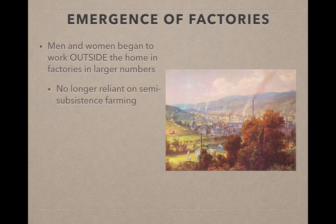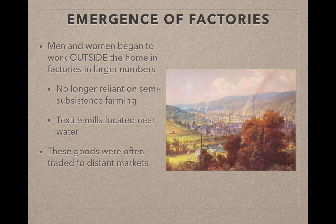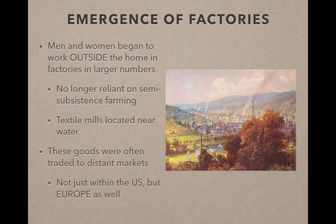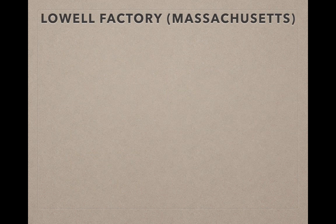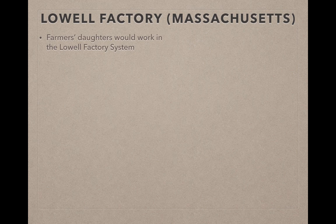Workers were no longer reliant on semi-subsistence farming because so many farm goods were being produced, especially in the Midwest. Textile mills were often located near water, and these goods were often traded to distant markets — specifically in Europe. It's not just the U.S. they're trading goods with, but also Europe. Make sure you know that phrase: 'distant markets.' An example of a factory system is the Lowell factory in Massachusetts.